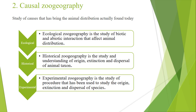The first branch is ecological zoogeography. In ecological zoogeography we study the environment and see how the environment plays an important role in animal distribution. As you know, environment is the key factor in animal distribution, so ecological zoogeography is the study of the biotic and abiotic interactions that affect animal distribution.